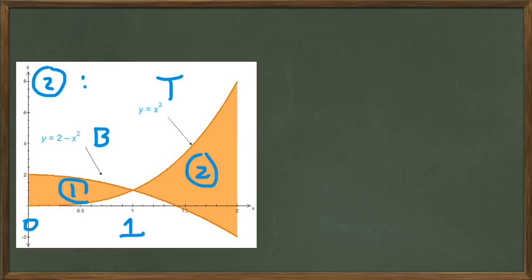So we have to find these two areas by two integrals. Let's be clear that we're still doing the same method. We're finding rectangular widths, and the heights of these rectangles are top curve minus bottom curve.